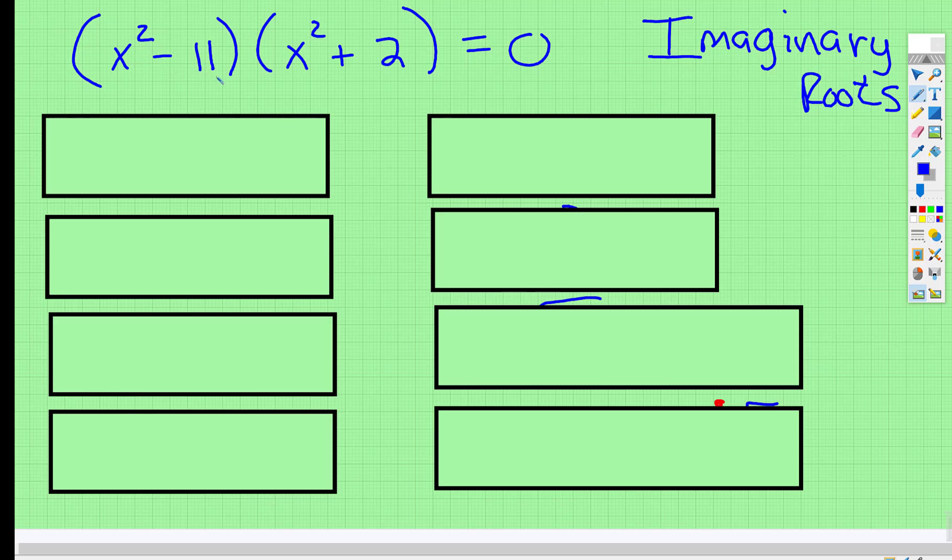So if you have x squared subtract 11, and x squared plus 2, if you multiplied that out, you would have a fourth degree polynomial.